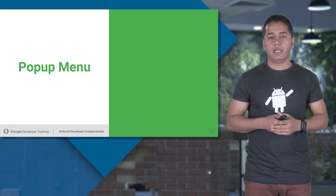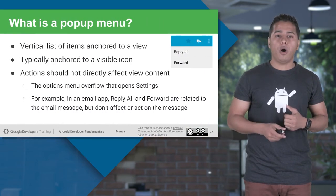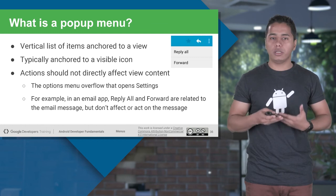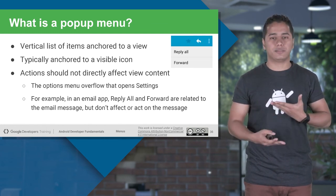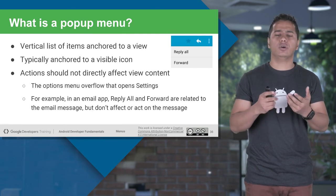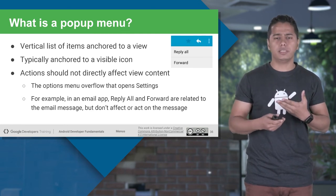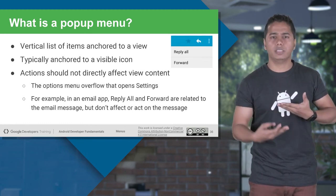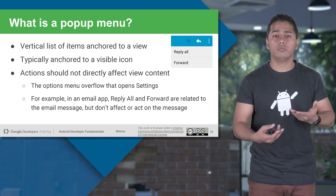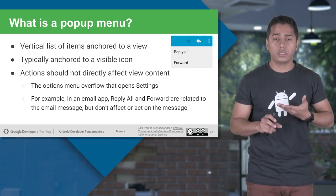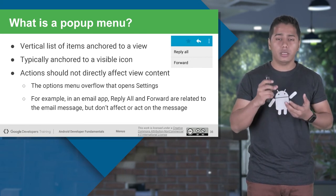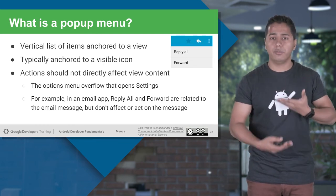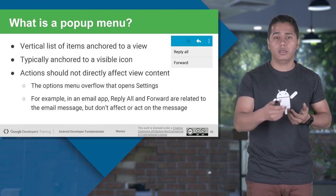Next, popup menu. What is a popup menu? Popup menus are anchored to a view and appear in the form of a list. A good example: in Gmail, there is a reply button, and when you click on it, menus appear — reply, reply to all, forward. That's what a popup menu is. You click on one view — it can be a button, image button, image, or TextView — and a list appears right below it.